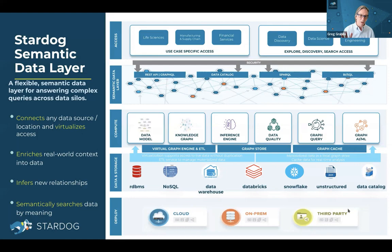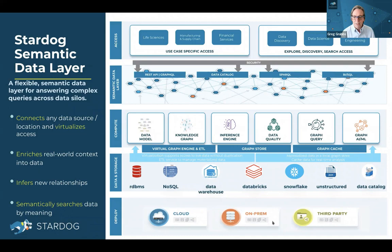I always like to show this architecture slide before launching into a demo for those who want to understand how the layers work. Going bottom to top: you may deploy on our hosted cloud environment, your own cloud environment, or on-premise — any combination is possible. Your data sources will be many types of things: relational databases, NoSQL such as Apache Cassandra, Databricks Hive notebooks, and you might even be pointing to JSON or CSV files as part of your data sources that feed the knowledge graph.